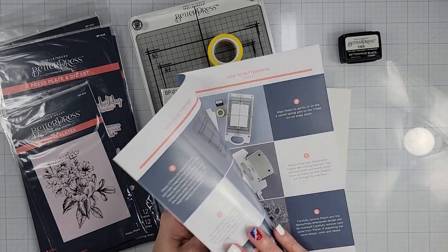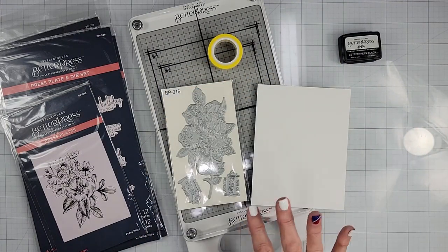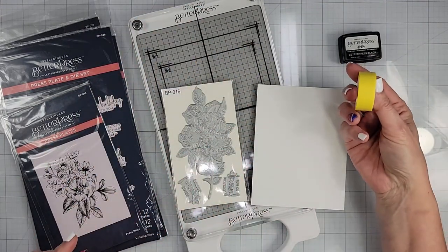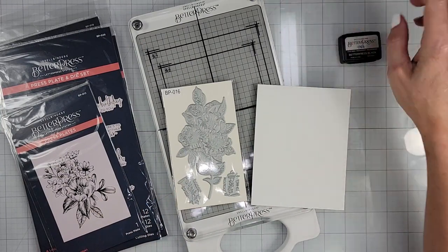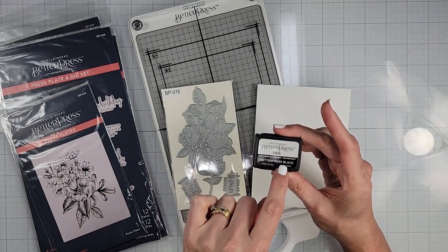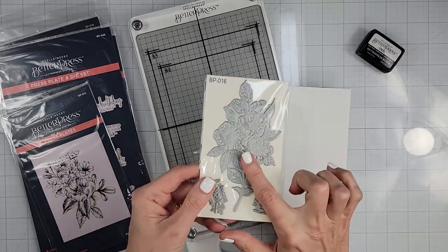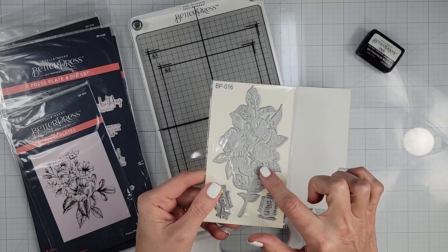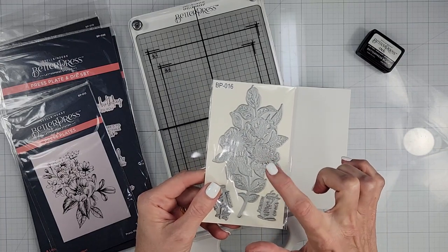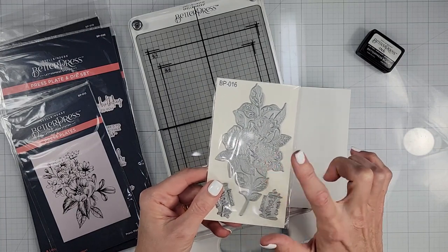I've already looked through the instruction manual. Good reference. I'm going to keep my little Best Ever Craft Tape off to the side and this is the specialty Better Press Black and this is the only color I have right now.